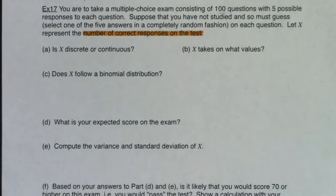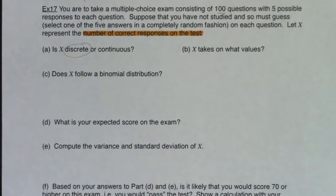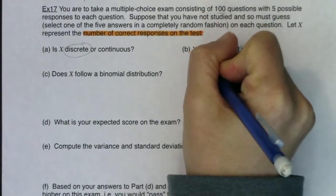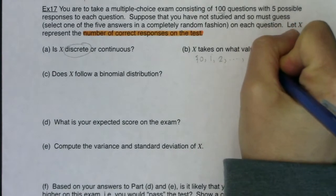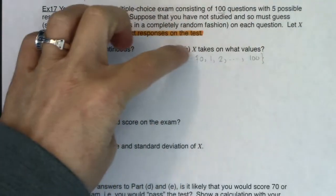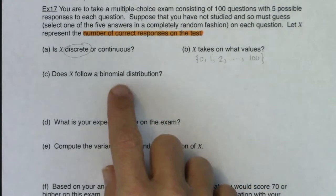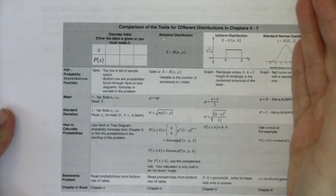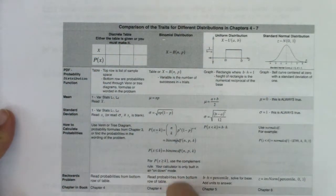If I'm taking a test, am I going to count the number of correct responses or measure? I'm definitely going to count it, so this is discrete. What values can X take on? I could get 0 right, 1 right, 2 right, all the way up to 100. If this wasn't binomial and I had to make a table, you'd need 102 columns and an awful tree diagram. It's going to be binomial, but let's check those four properties.